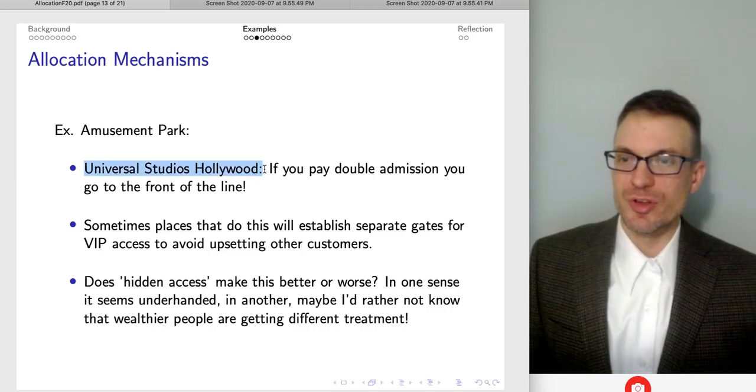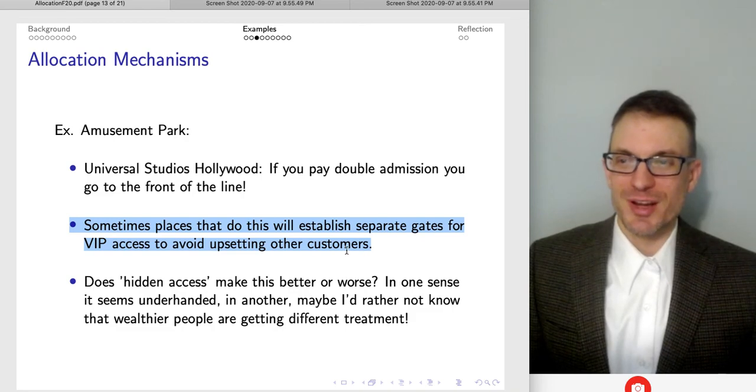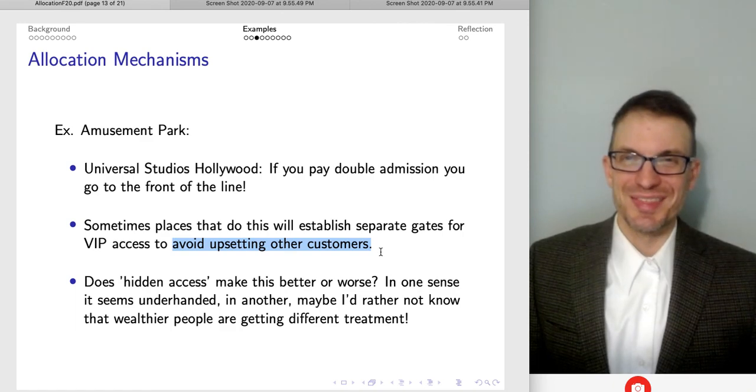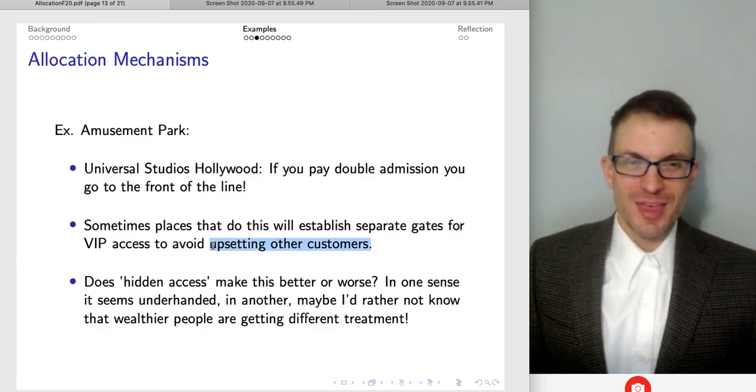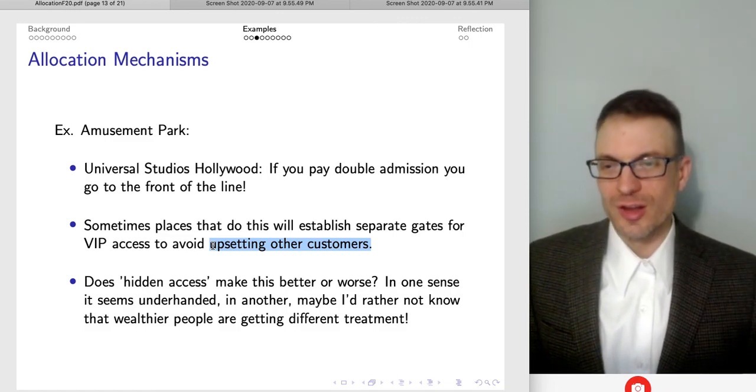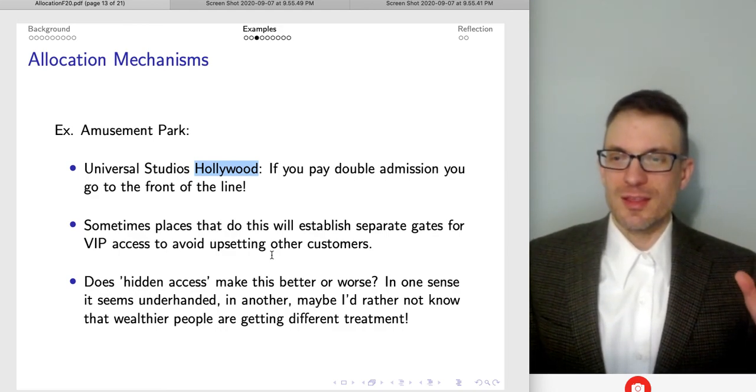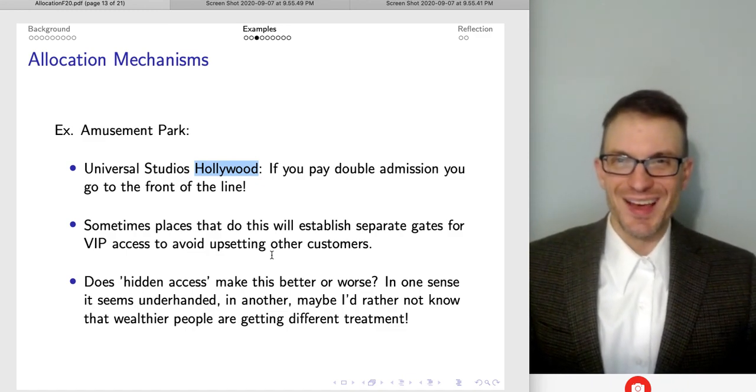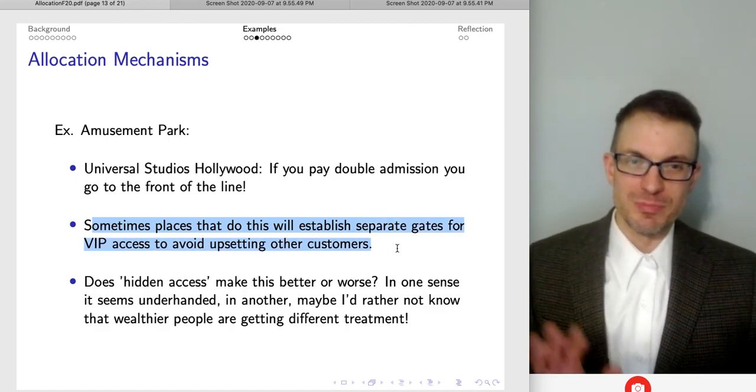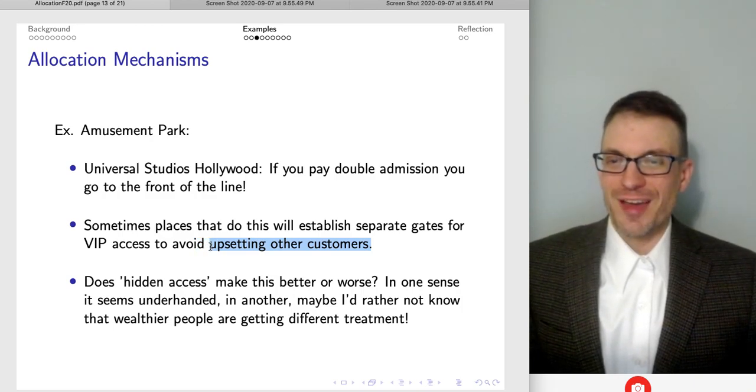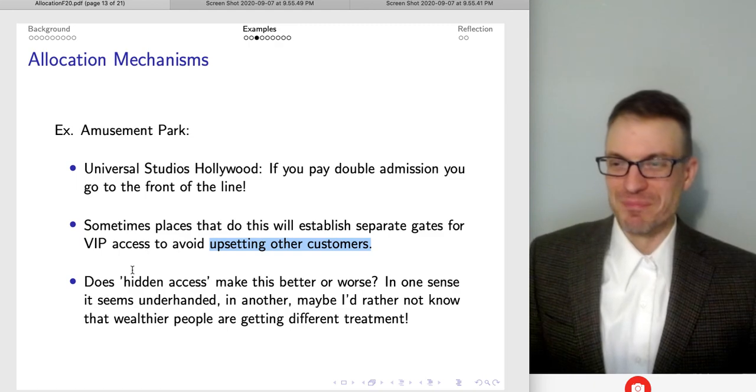There's an amusement park example as well. So Universal Studios Hollywood. If you pay double admission, you can go to the front of the line. Seems pretty good. Also, sometimes places that do this establish separate gates for VIP access to avoid upsetting other customers, which I think is just awesomely terrible. On one hand, this is something that's not going to sit well. I mean, you're thinking about you're waiting in lines. These are long lines. It might be hot. In Hollywood, that's Los Angeles, Southern California. And people don't take kindly to other people cutting the line. And so here you're realizing this. And I don't know if this is, who knows? I shouldn't say this is Universal Studios that's actually doing this. But the very fact that you'd have a separate gate to avoid upsetting other customers seems to indicate that you might be suspecting there's at least some of an issue here.